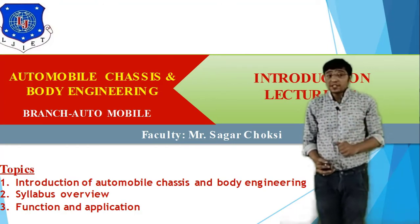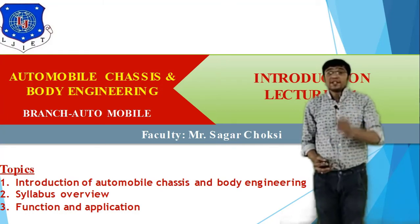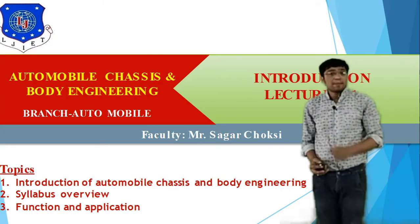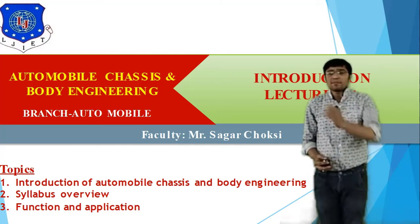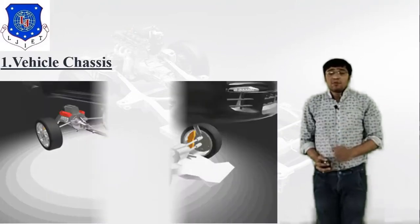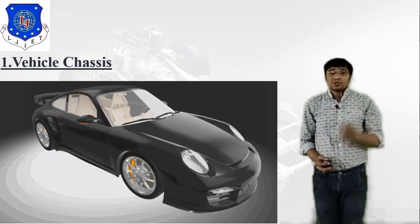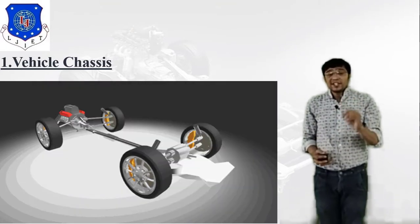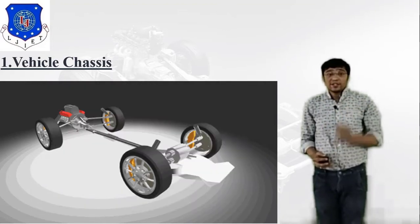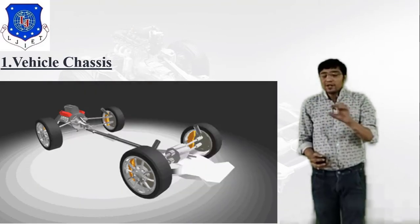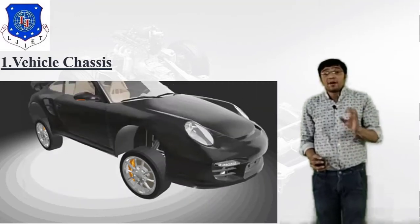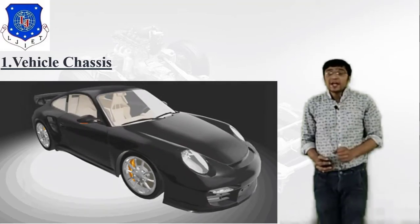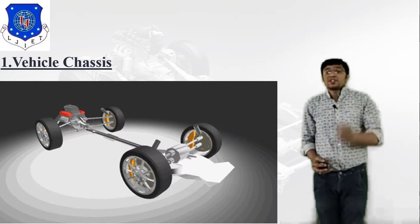There are many types of chassis and many types of frames. In this session we will discuss the syllabus and overview of automobile chassis and body engineering, as well as functions and applications. What is vehicle chassis? A frame is like a road structure, and when you attach four wheels and an engine to it, it becomes a chassis. As you can see in the image, a car body is placed over this whole structure — that is what vehicle chassis is.